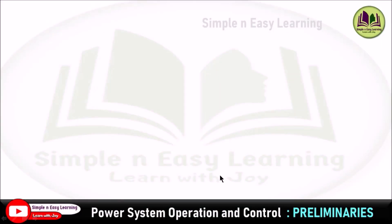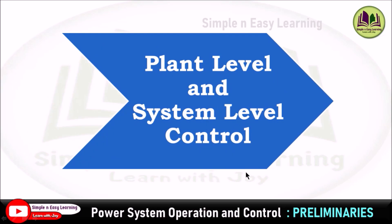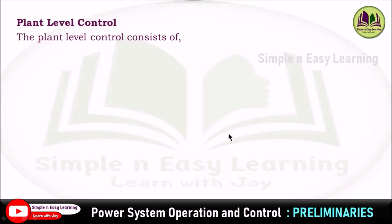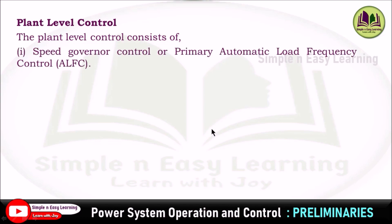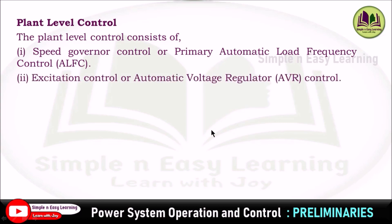Power system operation control — today we are going to see about the plant level and system level control. Plant level control consists of a speed governor, otherwise called primary automatic load frequency control (ALFC), and the second one is excitation control or automatic voltage regulator (AVR) control.